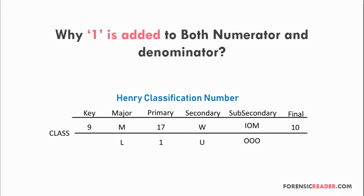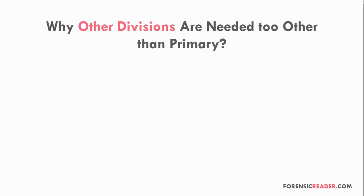Why is one added to both numerator and denominator? Looking at the Henry classification number, the primary values are set between major and secondary. The major value can be 'O/O' (not zero). If there are no whorls, the primary value also comes to zero over zero, which can easily be misunderstood with the major classification number. That is why we add one — to get the lowest possible group value of 1/1.